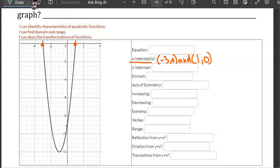The y-intercept appears to be right here. We have 0 comma negative 9.